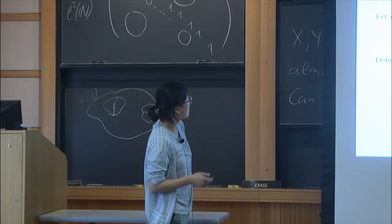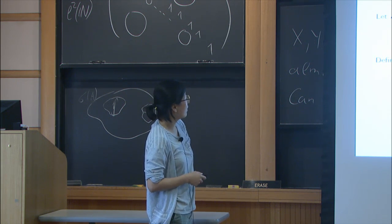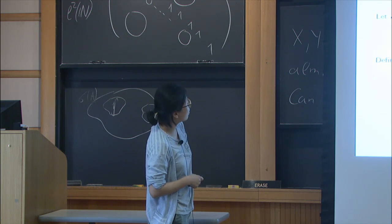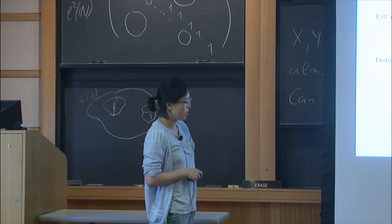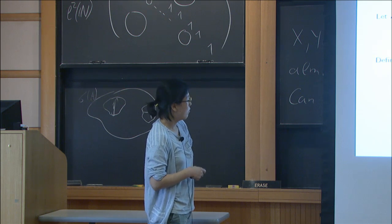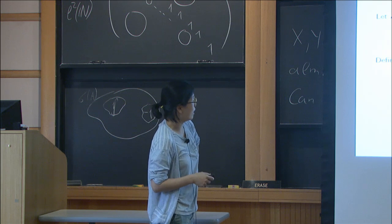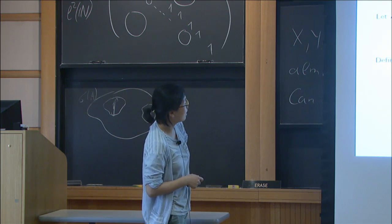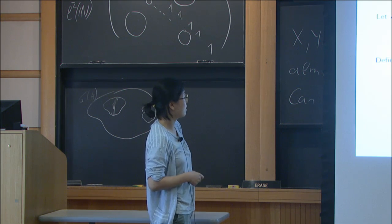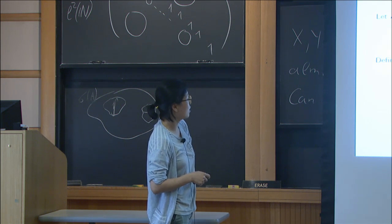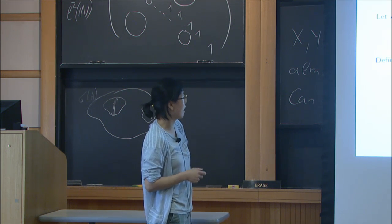Now let's fix K be a rational field Q. The root number of E over Q is the sign appearing in the functional equation for L function of E. It is plus one if E has even analytic rank and it is minus one if E has odd analytic rank.